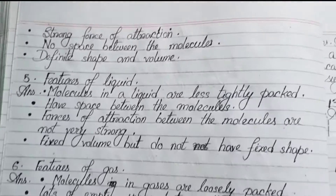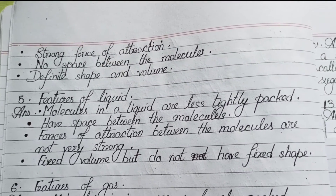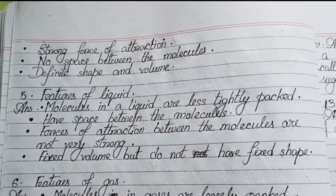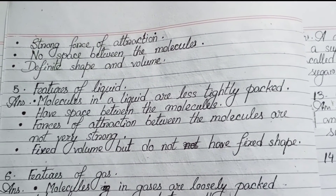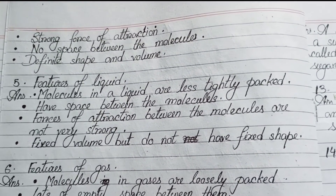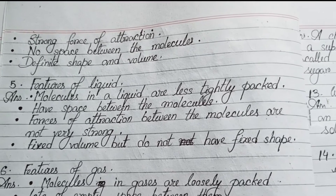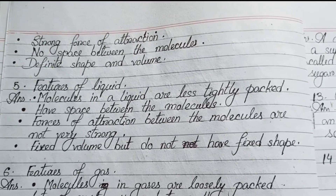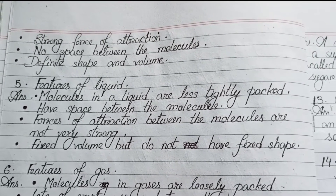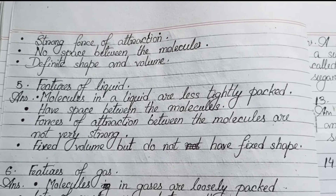Solids have a strong force of attraction, no space between the molecules, and a definite shape and volume. Number 5: Features of liquid — molecules in a liquid are less tightly packed, have space between the molecules, forces of attraction are not very strong, fixed volume but do not have a fixed shape.